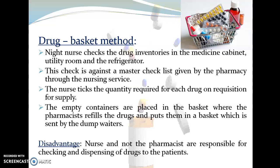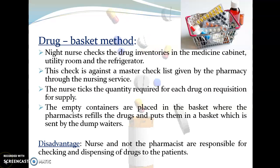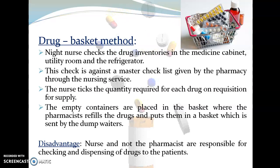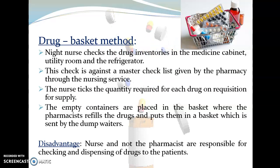The first method under this is the drug basket method, where the night nurse checks the drug inventories in the medicine cabinet, the utility room, as well as in the refrigerator. This check is against the master checklist given by the pharmacist. The nurse checks the quantity required for each drug on the requisition for supply, and empty containers are placed in the basket where the pharmacist refills the drugs and sends them back via dumbwaiters.